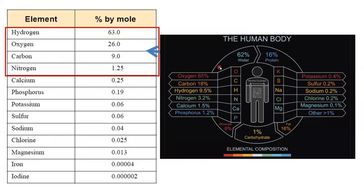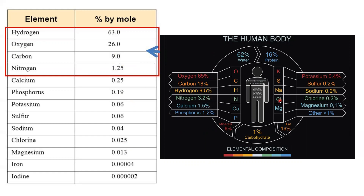When looking at the periodic table again, we're going to have a couple of different terms depending on if we're thinking about the rows going across — those are known as periods — versus the columns. What I want to point out is that if all of these elements in a period are colored the same, you may expect similar chemical properties throughout, but that's not going to be the case. We'll see that the horizontal rows, the periods, aren't going to have the same chemical properties throughout. Those are going to be very, very different — particularly if we're looking at the left versus the right side.